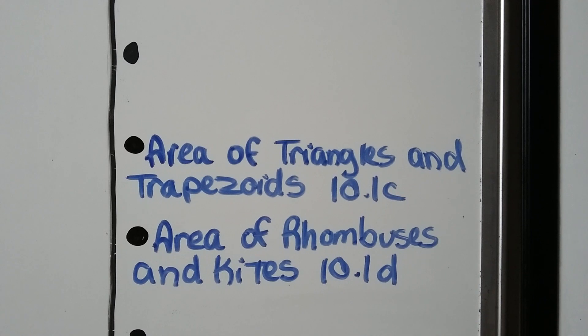Our next lesson is going to be 10.1c, the third part of 10.1. We're going to talk about the area of triangles and trapezoids. After that, we're going to talk about the area of rhombuses and kites, and we'll be finished with 10.1.